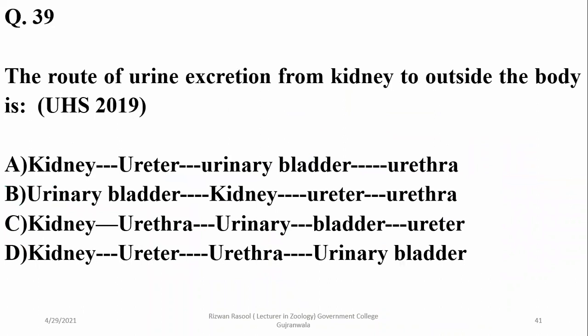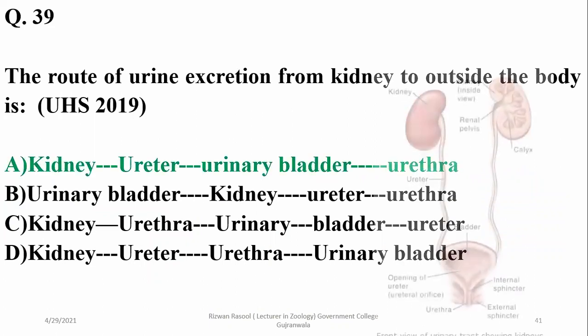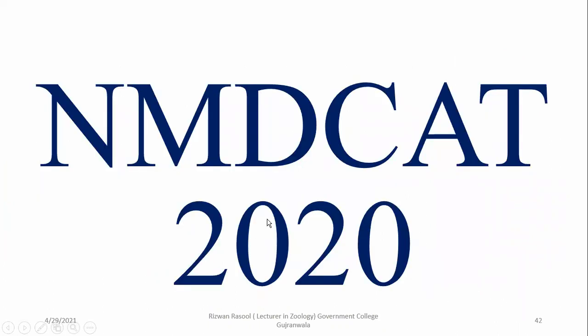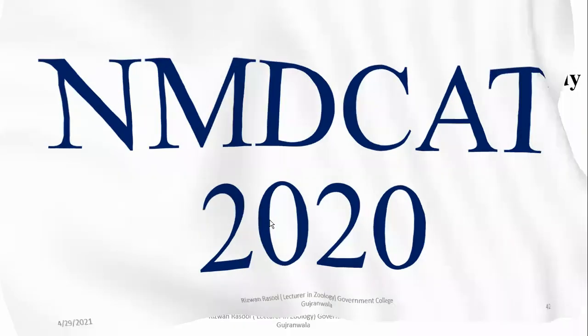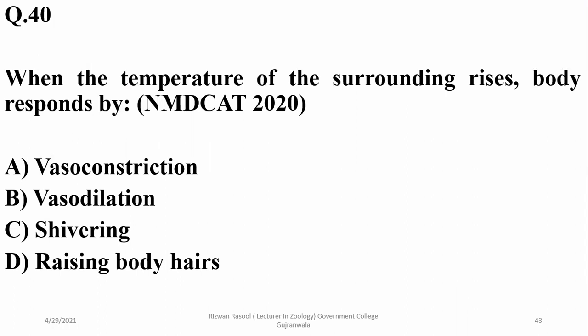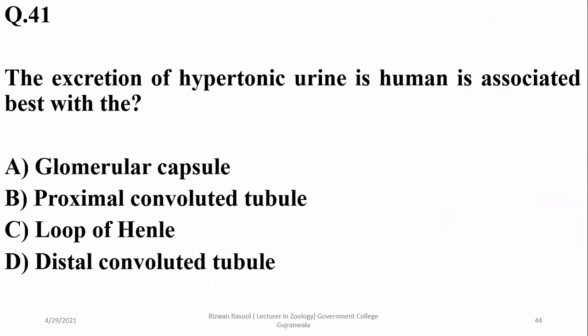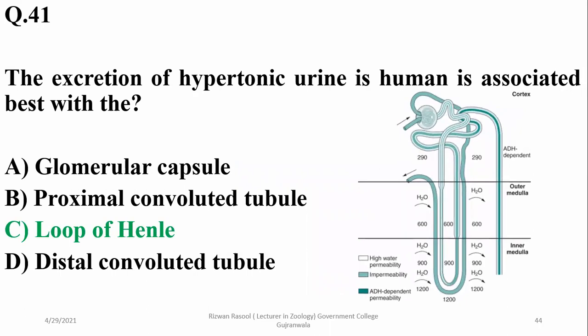The route of urine excretion from the kidneys to outside the body is: kidney → ureter → urinary bladder → urethra. From MDK 2020: when the temperature of the surroundings rises, the body responds by vasodilation to promote heat loss. The other options relate to conditions for decreased surrounding temperature. The excretion of hypertonic urine in humans is associated best with the loop of Henle — Charlie, from a federal board textbook exercise.